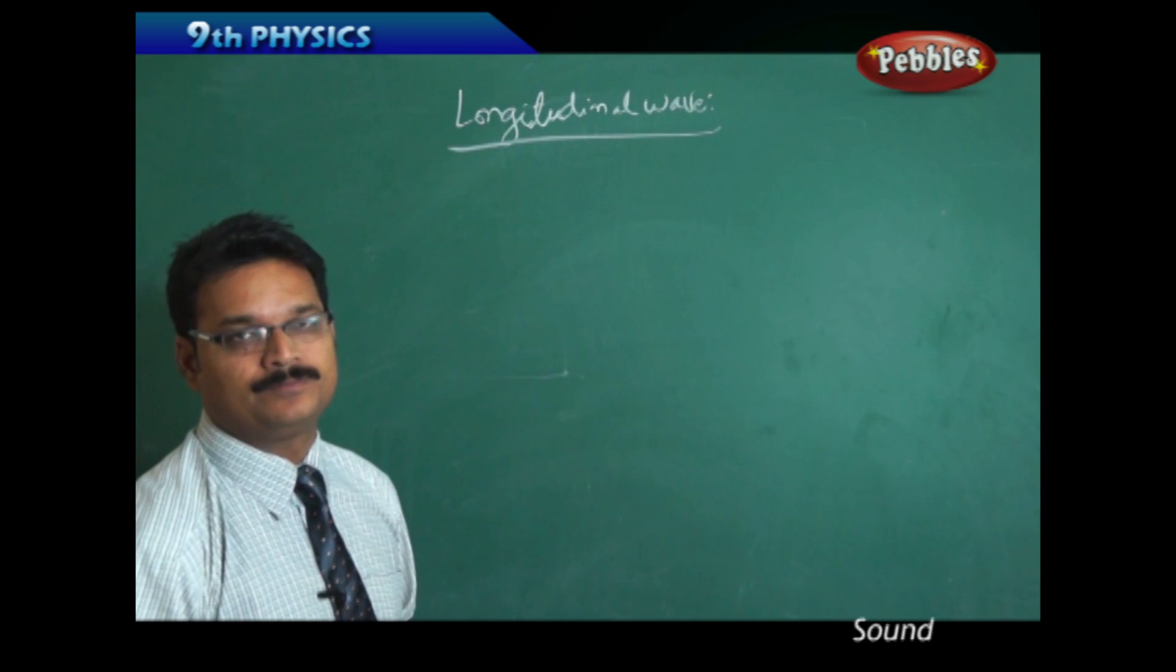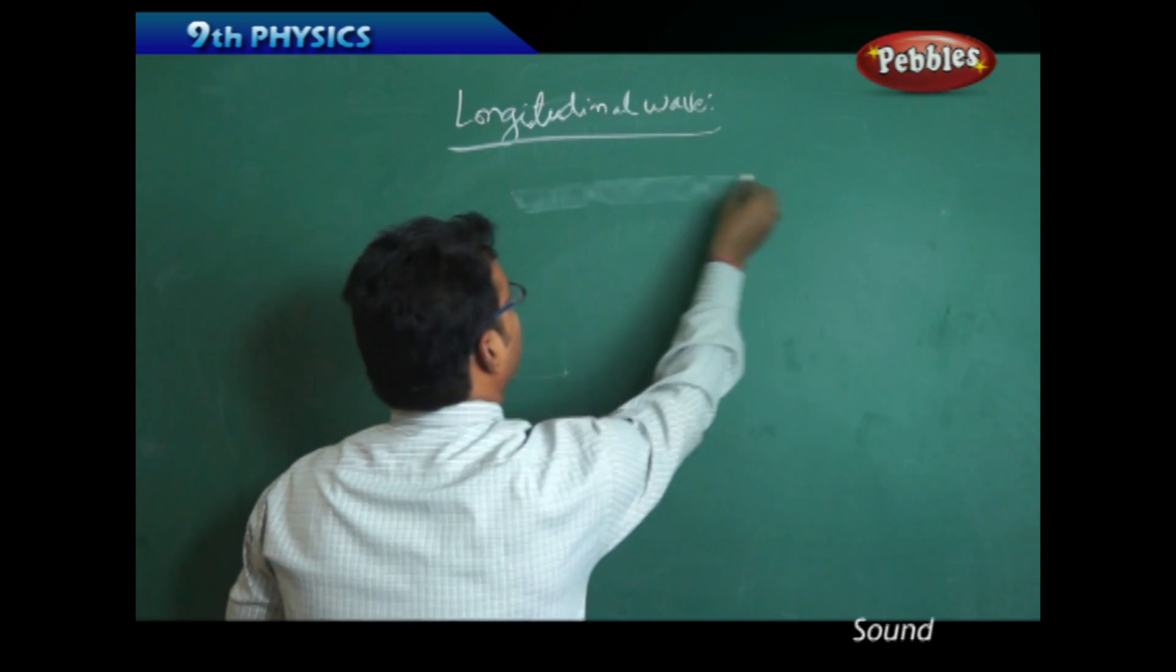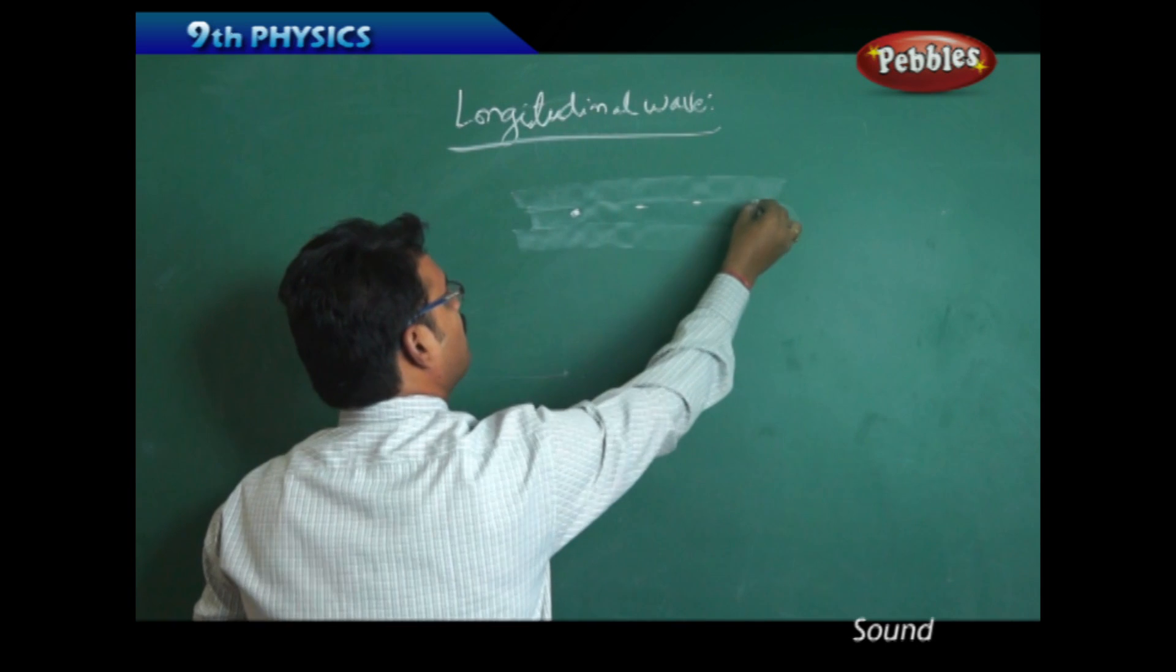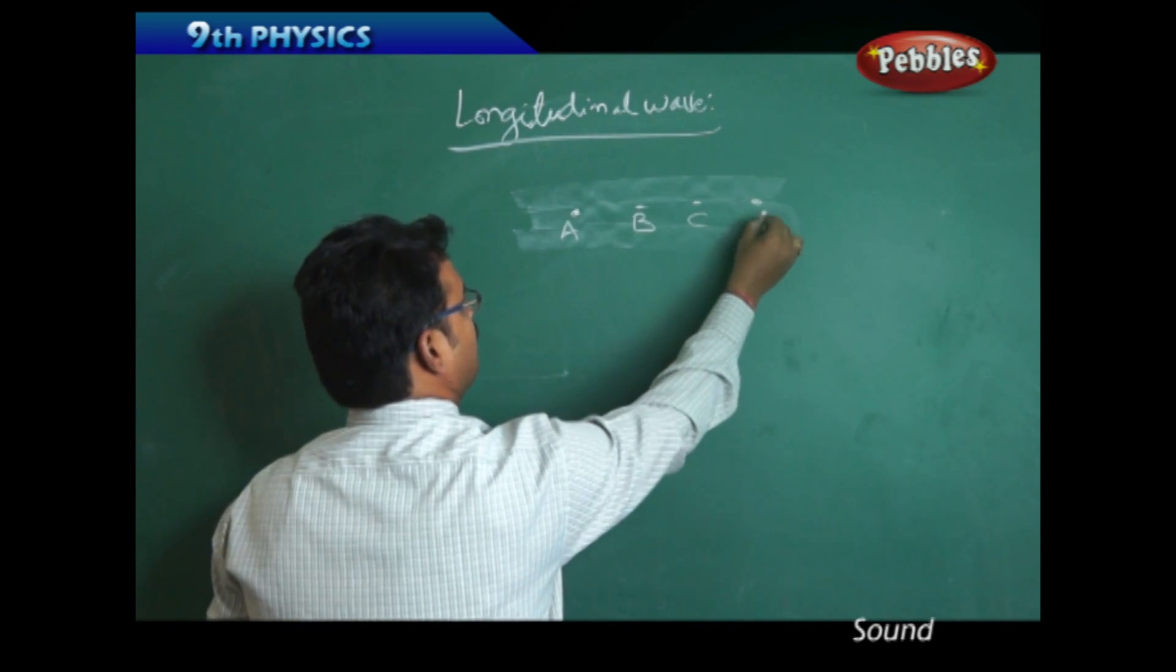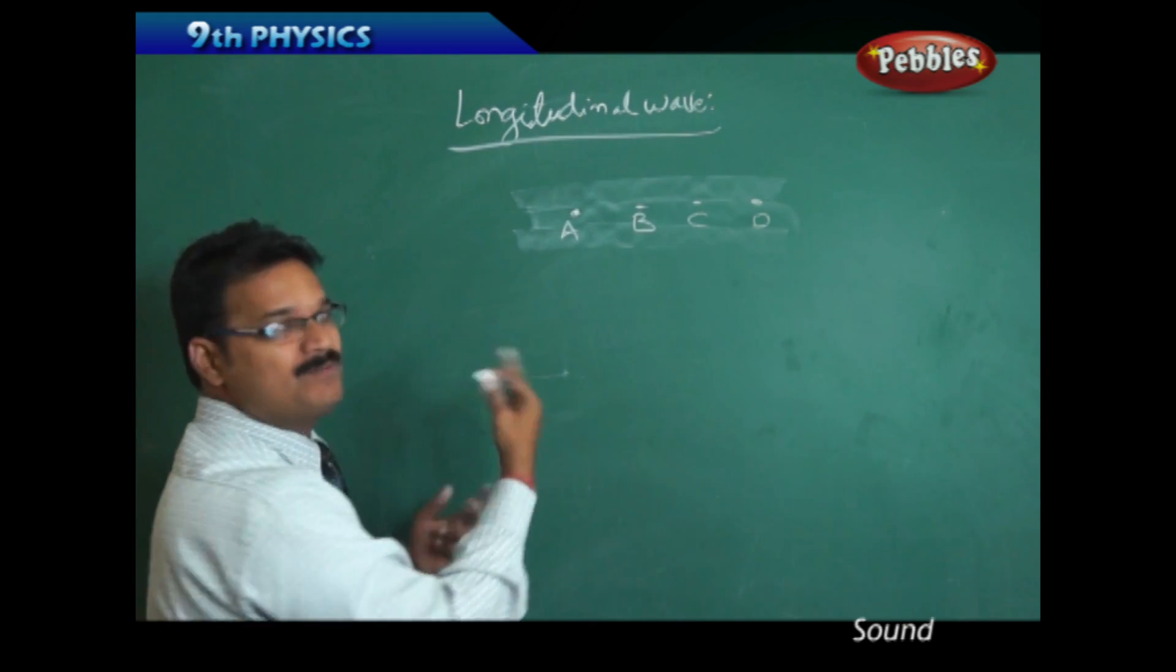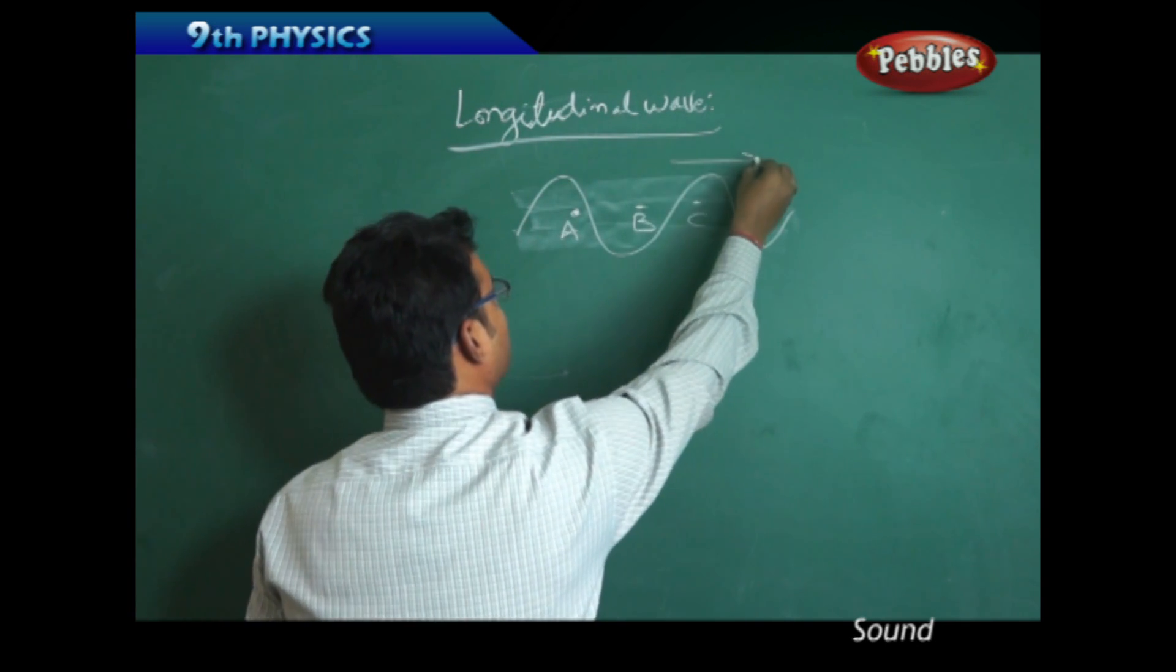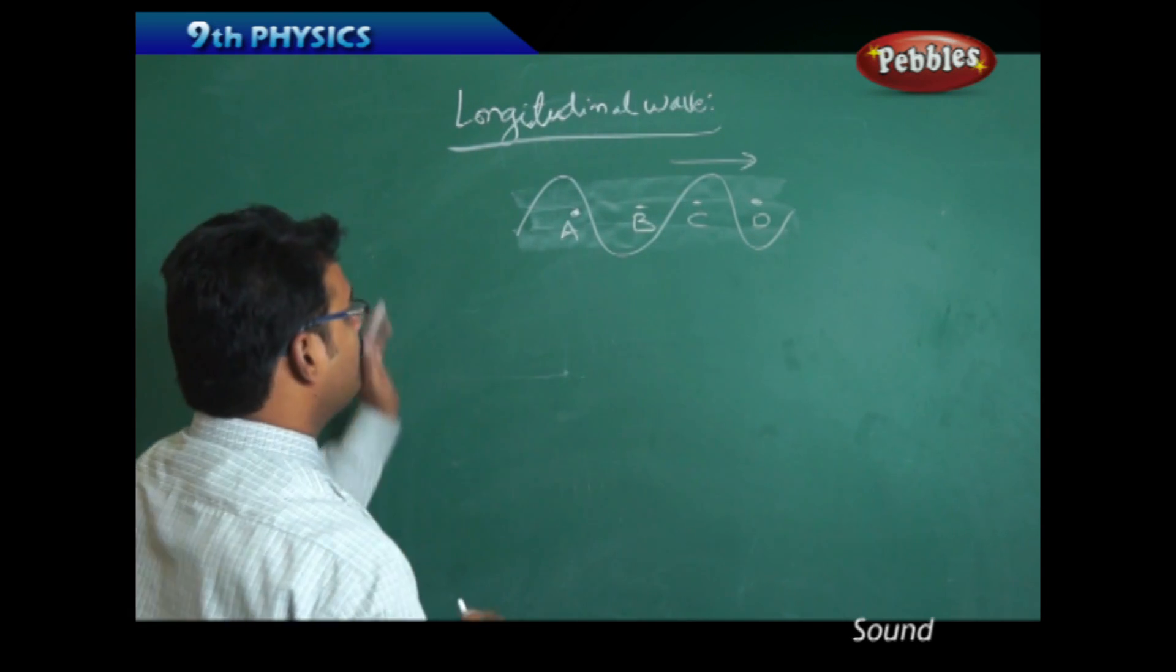What is meant by longitudinal wave? Take a medium. The medium has many particles: particle A, B, C, D. Now a wave is produced from some source, and the wave is traveling through the medium in this direction, on the right side.